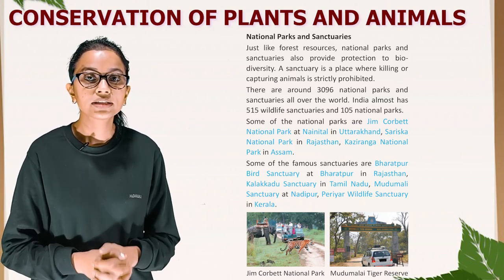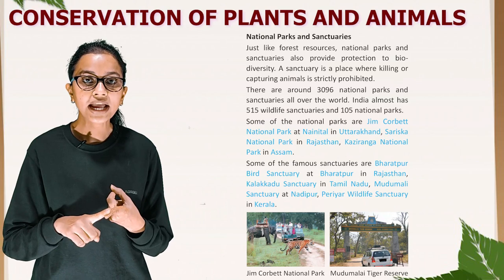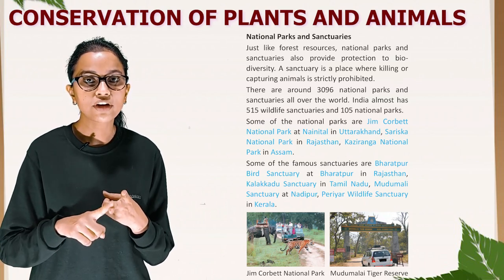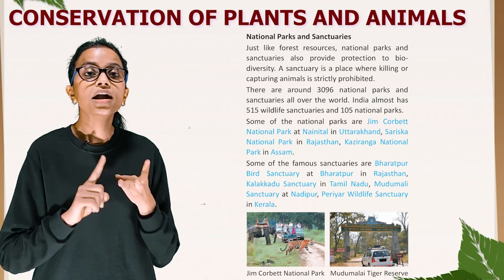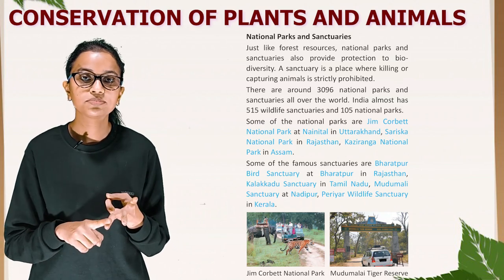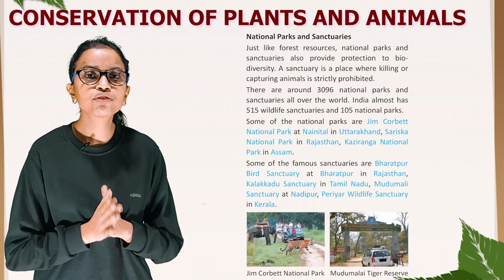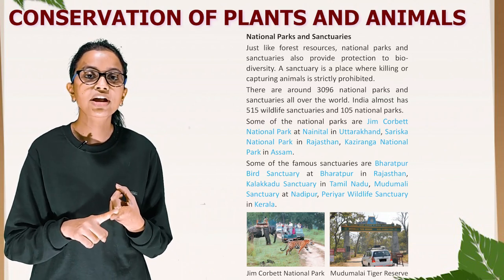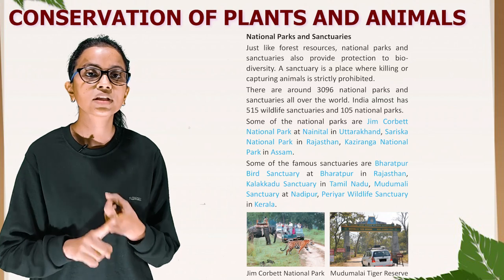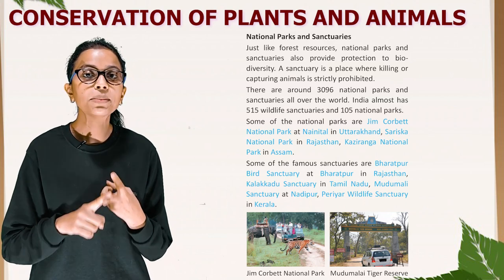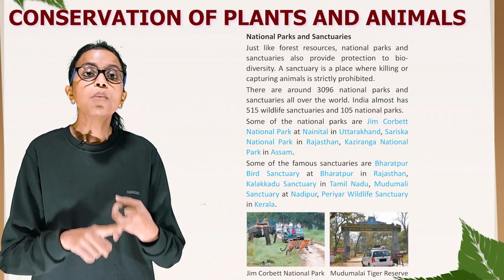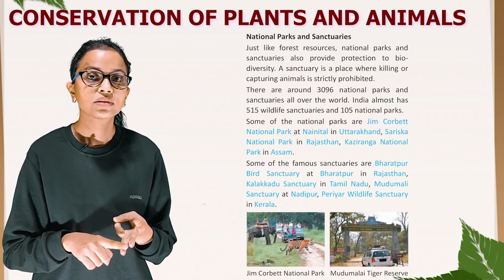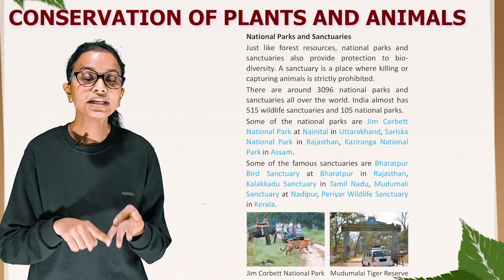Some of the national parks are Jim Corbett National Park at Nainital in Uttarakhand, Sariska National Park in Rajasthan, and Kaziranga National Park in Assam. Some famous sanctuaries are Bharatpur Bird Sanctuary in Rajasthan, Kallakadu Sanctuary in Tamil Nadu, Madhu Mali Sanctuary at Nadipur, and Periyar Wildlife Sanctuary in Kerala.